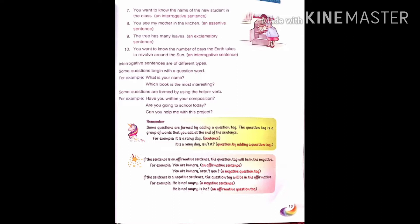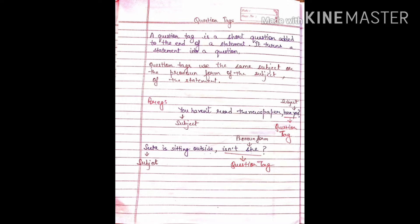Remember, some questions are formed by adding a question tag. The question tag is a group of words that you add at the end of the sentence. For example, 'It is a rainy day, isn't it?' — that is a question formed by adding a question tag. A question tag is a short question added to the end of a statement; it turns a statement into a question. Question tags use the same subject or the pronoun form of the subject of the statement.